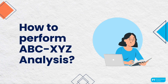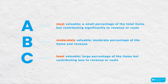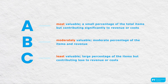How can you perform the ABC XYZ analysis? To effectively utilize the analysis, begin by classifying your products into three categories according to the ABC and XYZ criteria. The A items are the most valuable and important items, typically representing a small percentage of the total items but contributing significantly to the revenue or costs. B items are moderately valuable or important, constituting a moderate percentage of items and revenue. And C items are the least valuable and important items, often representing a large percentage of the items but contributing less to the revenue or costs.